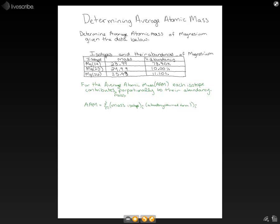Now let's do that for our example. The average atomic mass of magnesium equals the mass of its isotope. For Mg-24, that mass is 23.99 times its abundancy, which is 0.789 in decimal form.